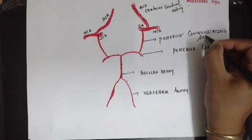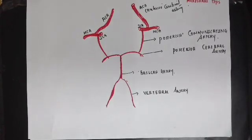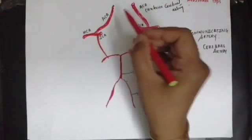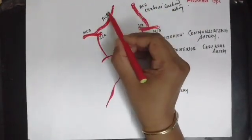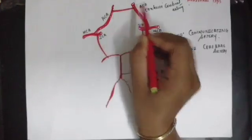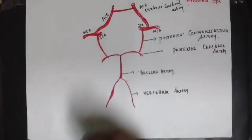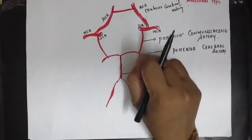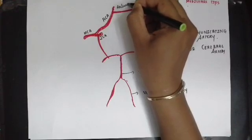You can see the anterior cerebral arteries on both sides. These are interconnected by means of an anterior communicating artery. The anterior communicating artery connects the two anterior cerebral arteries.